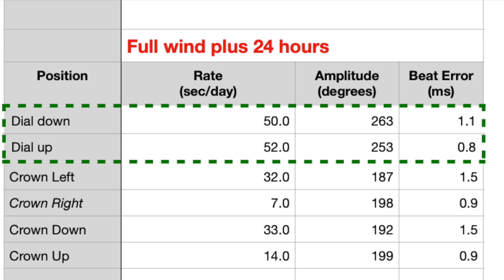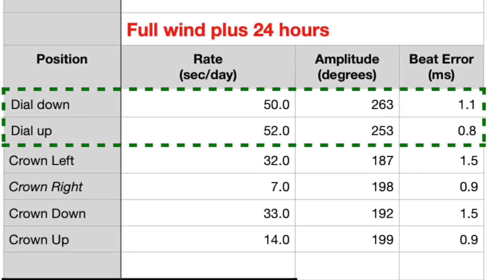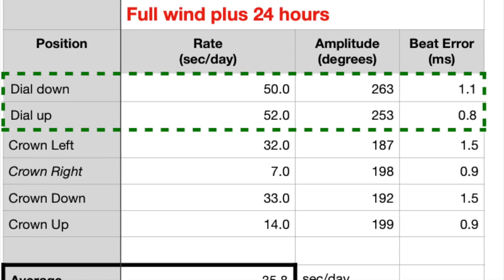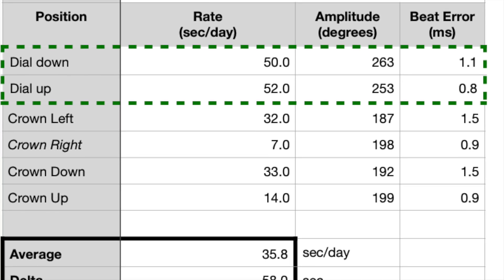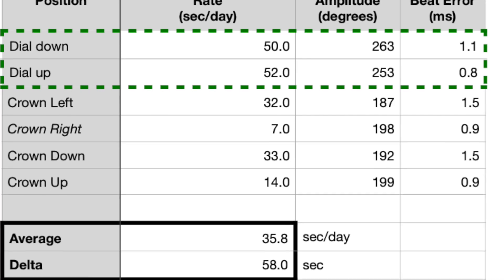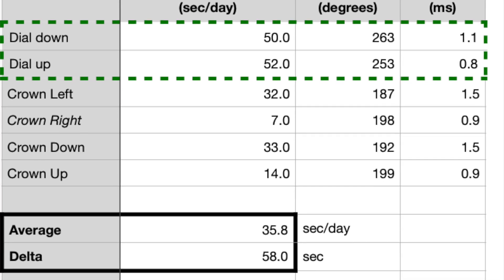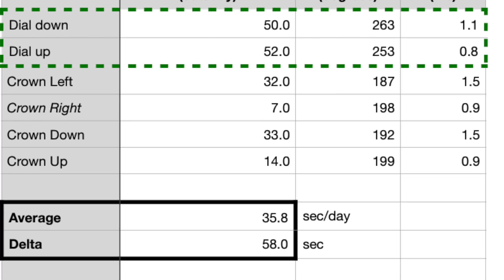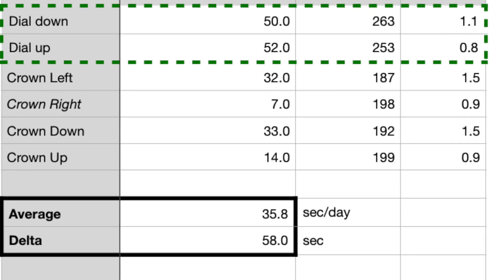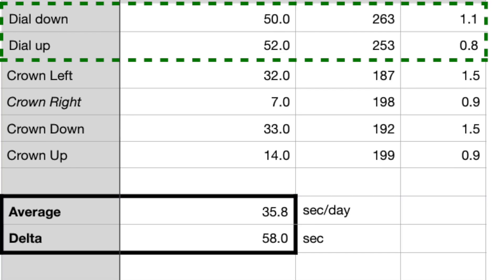You'll also note from the results that the vertical amplitudes after 24 hours aren't great. And the amplitude loss in the vertical positions from the horizontal positions is greater than what I'd expect to see. So I'm wondering if the pivots need polishing. I don't have training in that yet from WTI. So checking on and fixing that will have to wait.